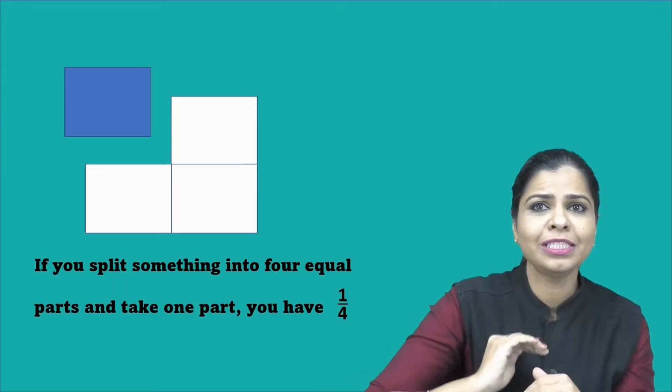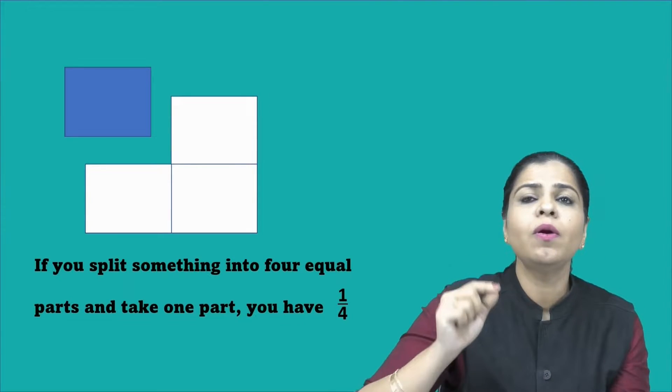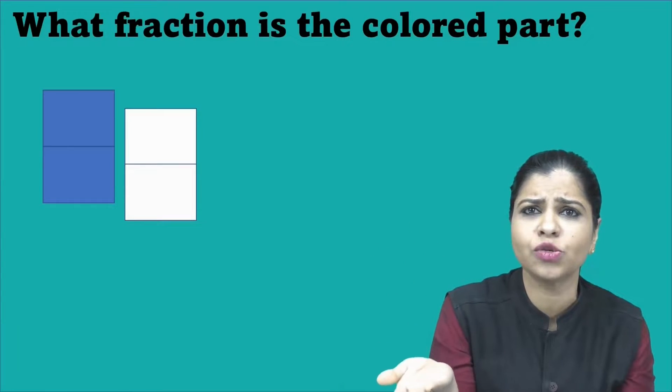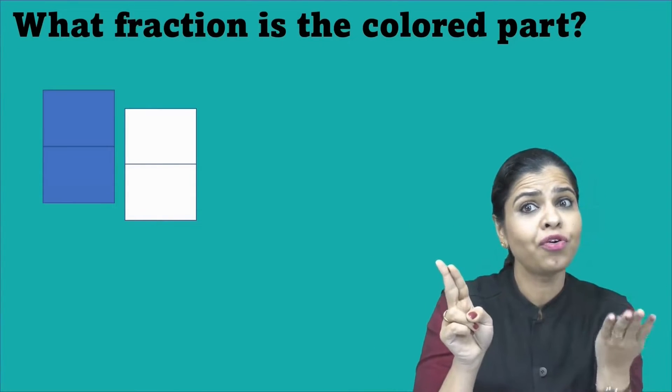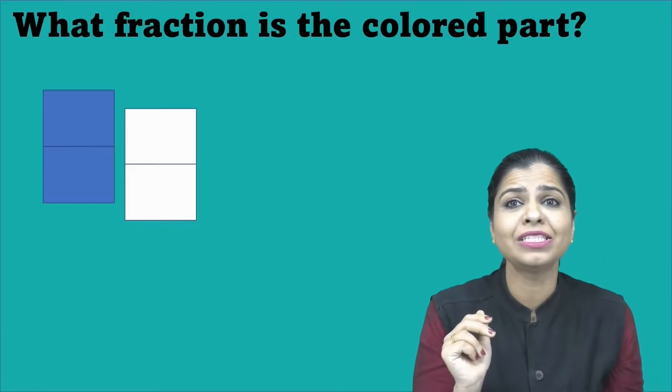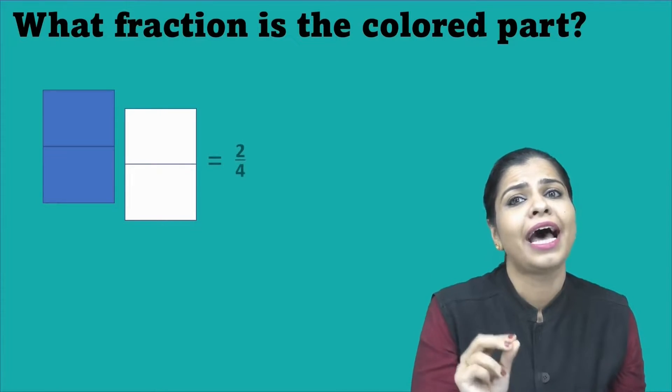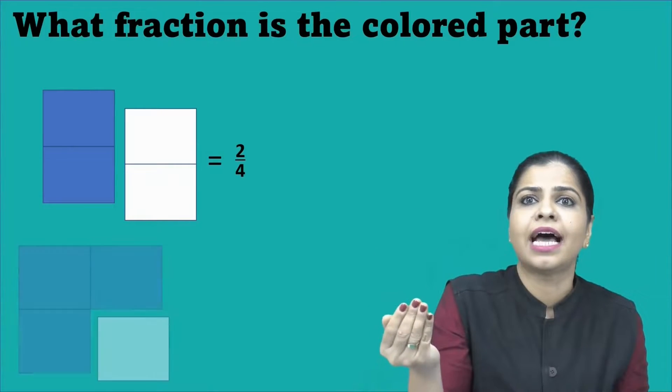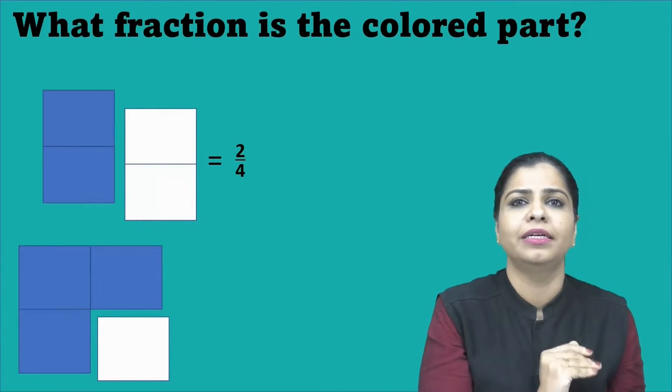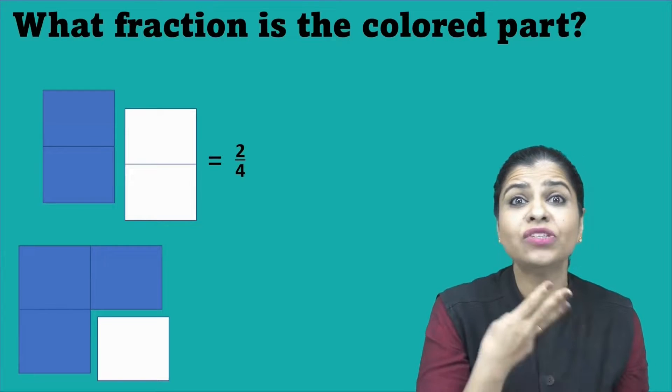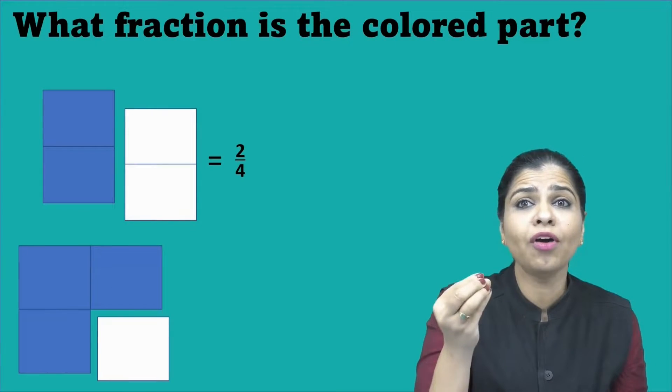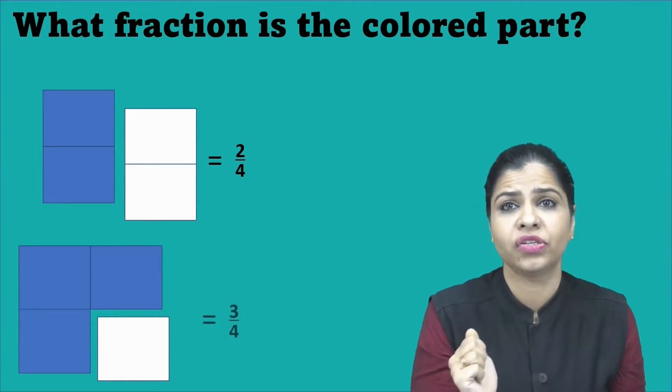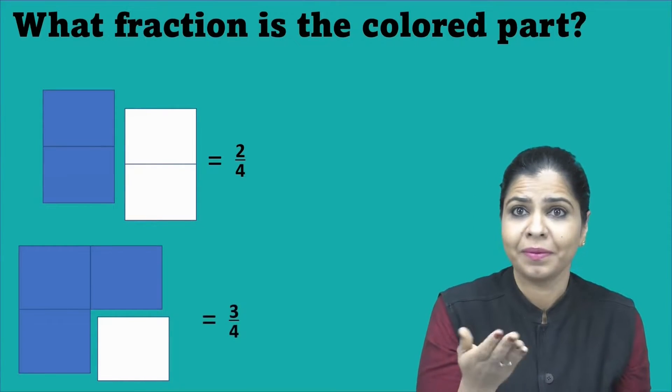So let's continue this process. Now what do I do? It's a rectangle. So I color one more rectangle. So how many shaded rectangles do I have? Two out of four. So how do I write this numerically? It is written as two by four. And then continuing. Next, I color one more rectangle. So how many parts are colored? Three. So three out of four are colored now. So I can write this numerically as three by four.